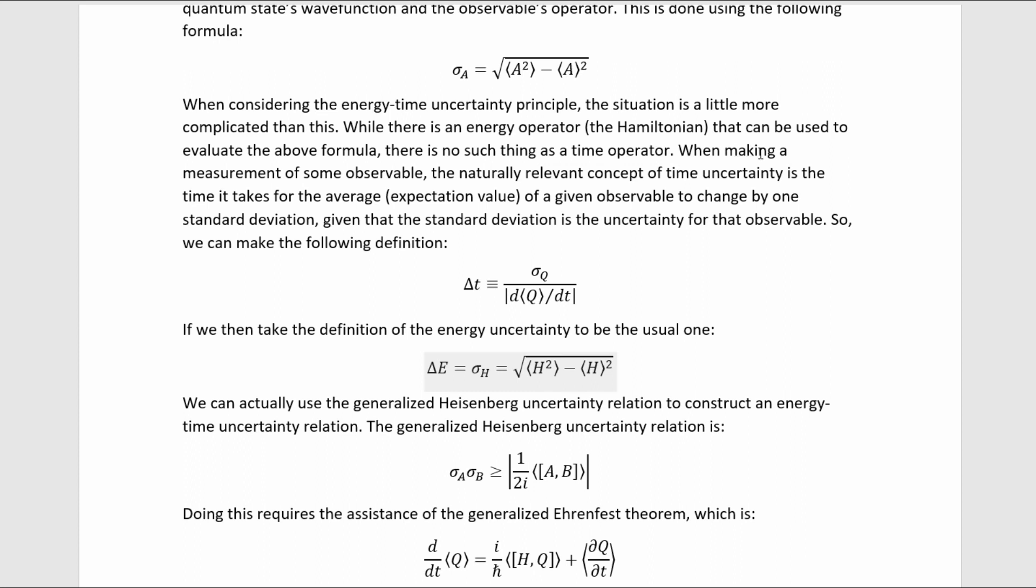When making a measurement of some observable, the naturally relevant concept of time uncertainty is the time it takes for the average, the expectation value, of a given observable to change by one standard deviation, given that the standard deviation is the uncertainty for that observable.